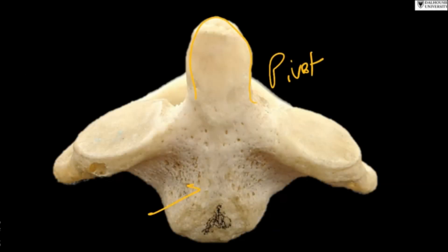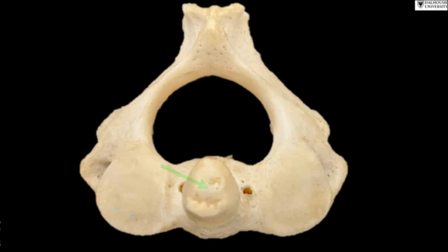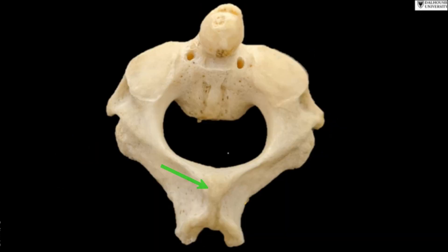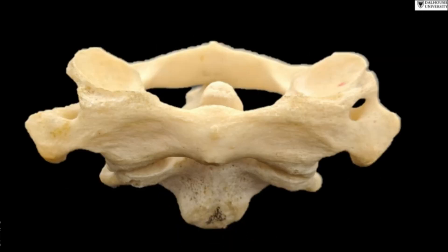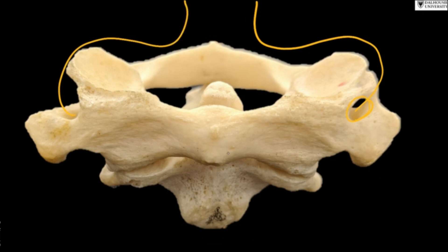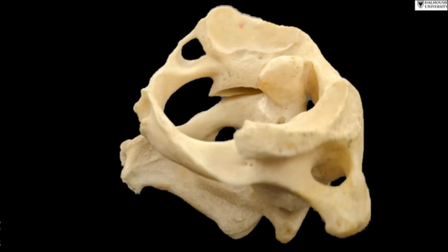This is the body of the axis vertebra. As I said, this is the borrowed body of the atlas, which is represented as the dens. You can see the dens from above. It has a posterior spinous process which is also bifid, like other cervical spinous processes. This is how the two vertebrae come together. You can see the foramen transversarium — the direction changes a little because the vertebral artery ascends up to the foramen magnum. Here you can see them together, how they articulate.